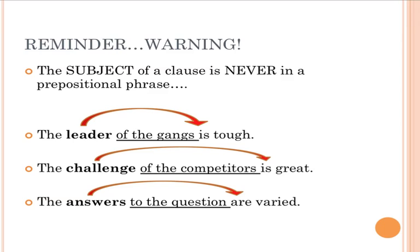For example, 'the leader of the gangs is tough.' The subject of that sentence is 'leader.' There is one leader, therefore it takes a singular verb: 'is.' Now it says 'of the gangs' right next to the verb — so isn't it supposed to be 'the leader of the gangs are tough'? No. Double check: the subject cannot be in that prepositional phrase. Therefore the subject is 'leader,' it is singular, and the verb has to be singular also — 'is.'